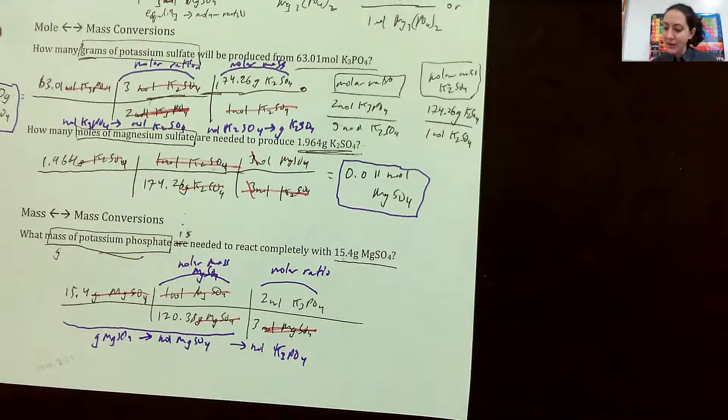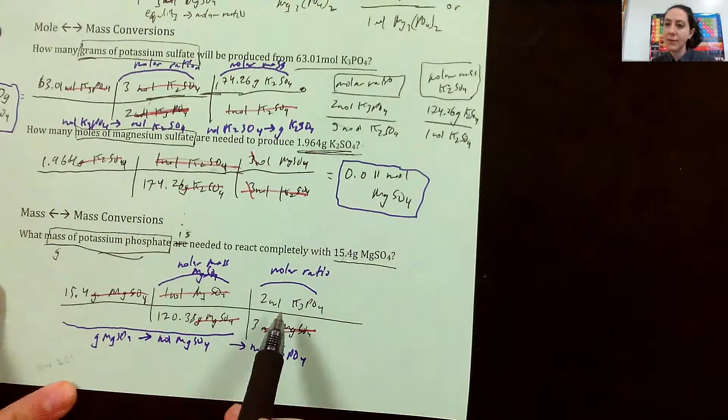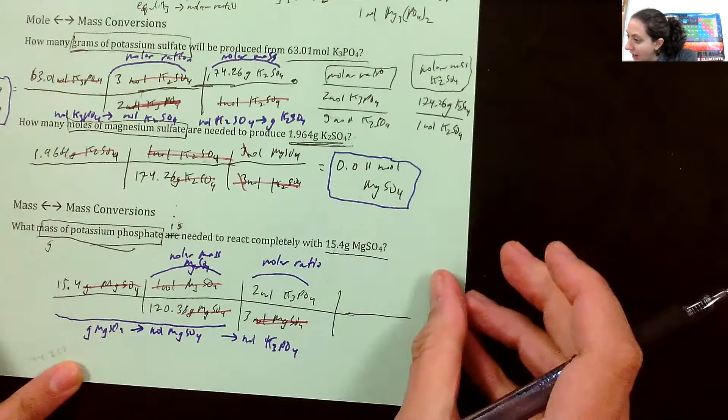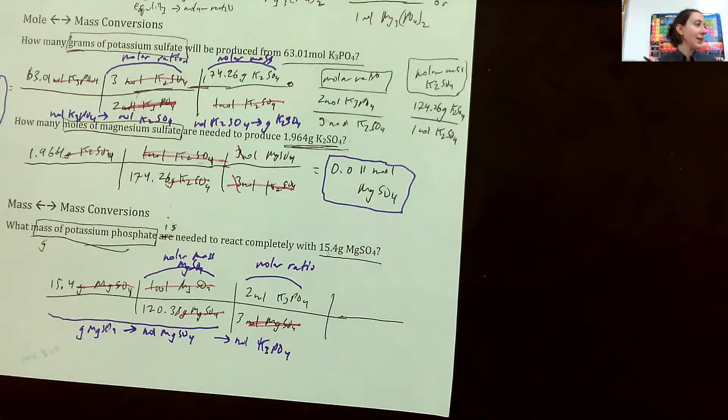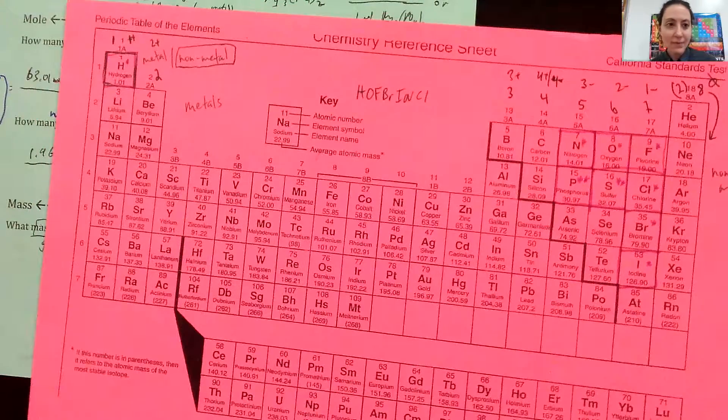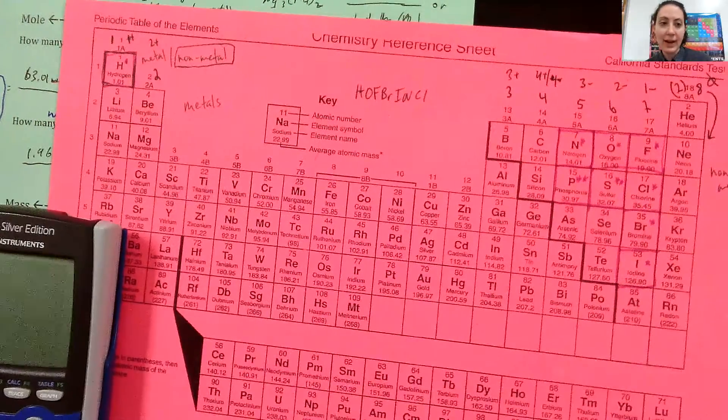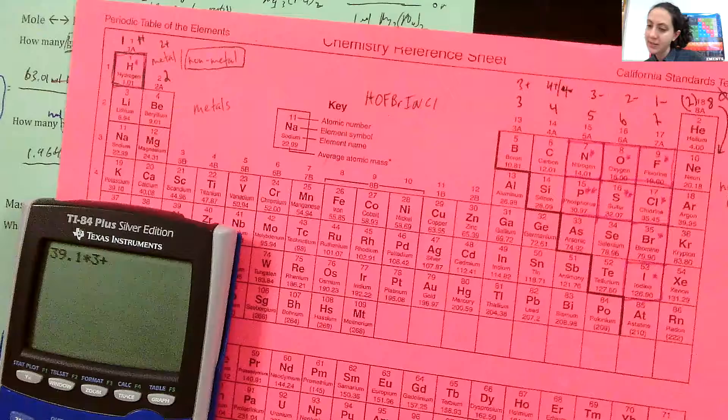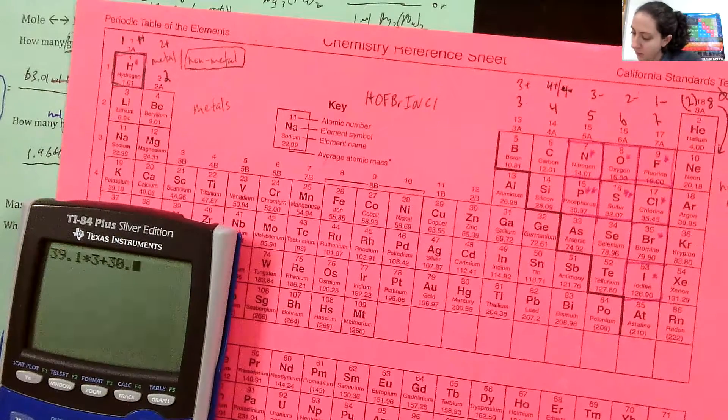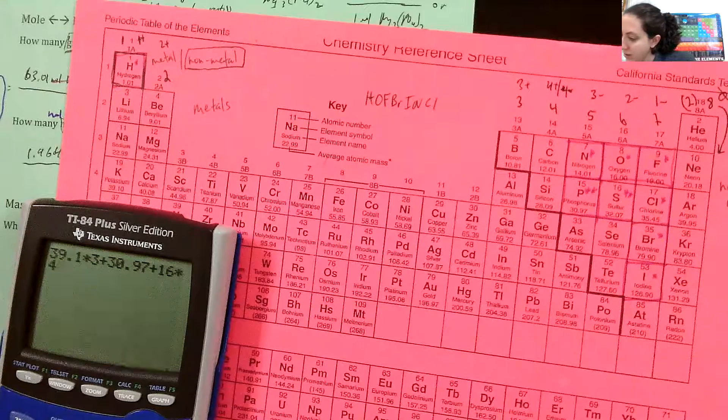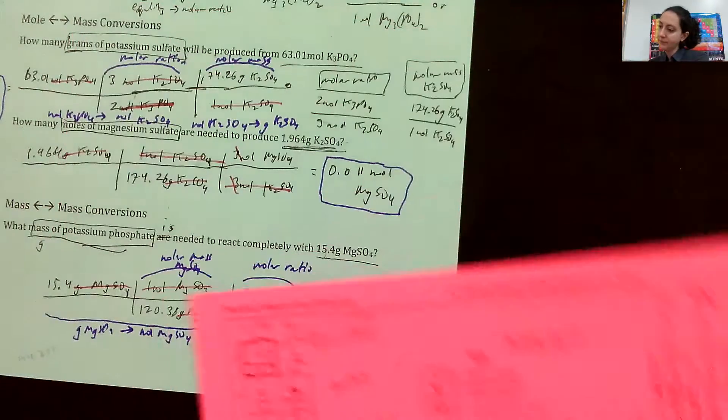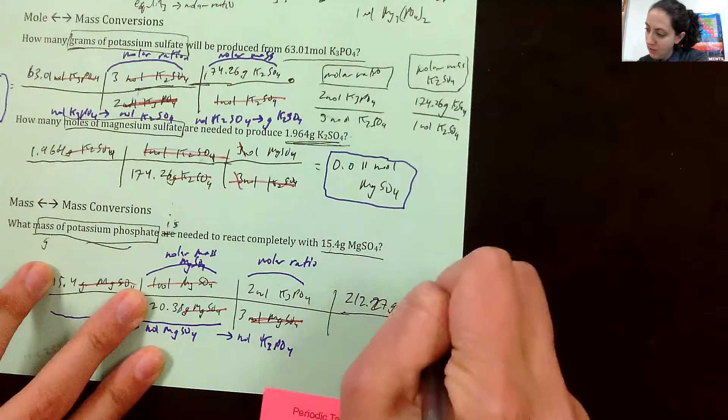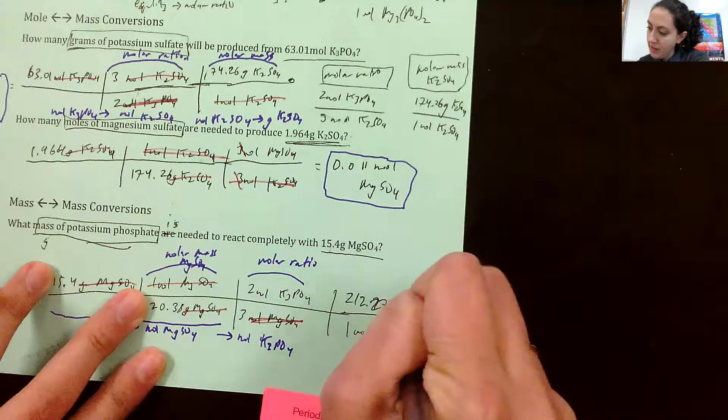So moles of magnesium sulfate cancel out. Next step, we have now moles of potassium phosphate and we need to get to grams of potassium phosphate. So that sounds like a molar mass to me and I don't have the molar mass of potassium phosphate either. So I better calculate it. That's 39.10 times three plus phosphorus is 30.79 plus 16 times four, 212.27. So 212.27 grams of K3PO4 for every one mole of K3PO4.